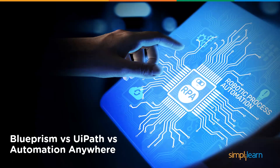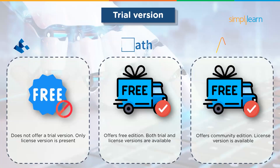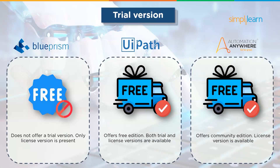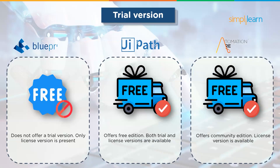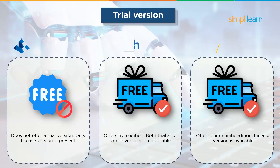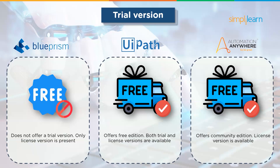The first criteria is trial version. Blue Prism doesn't offer a trial version; the users can only avail the licensed version for it. UiPath on the other hand offers both trial and licensed versions. Automation Anywhere also offers a community edition as well as licensed versions.